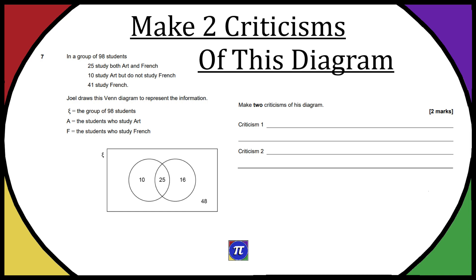So question seven: we have a group of 98 students. 25 study both art and French, 10 study art but do not study French, and 41 study French. Joel draws this Venn diagram to represent the information. The group of 98 students is E, A is equal to students who study art, and F is the students who study French.